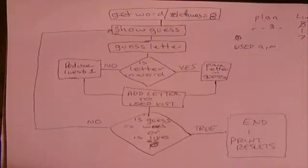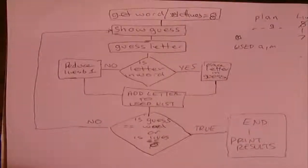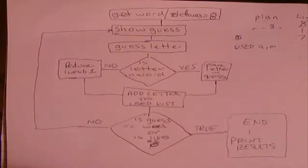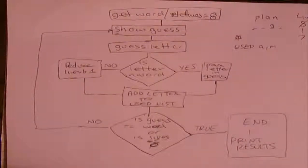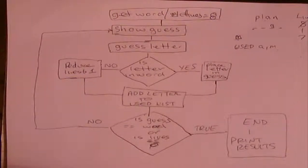That's the basic decomposition of hangman — all the key parts are in there. We've broken it down and we've got an algorithm now. If we gave this algorithm to somebody on paper they could follow it and play hangman. What we clearly want to do now is turn this into code — we'll talk about that in the next part.